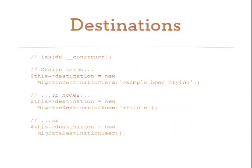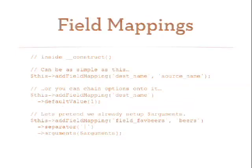Destinations are simpler because there's not as much variation — Drupal knows how to build a term or an article. To figure out what to pass into the constructor: for a term destination that's the machine name for the taxonomy vocabulary; for nodes it's the node type; for users you don't need one. I'd recommend pulling up the class because there are sometimes other options you might find useful.